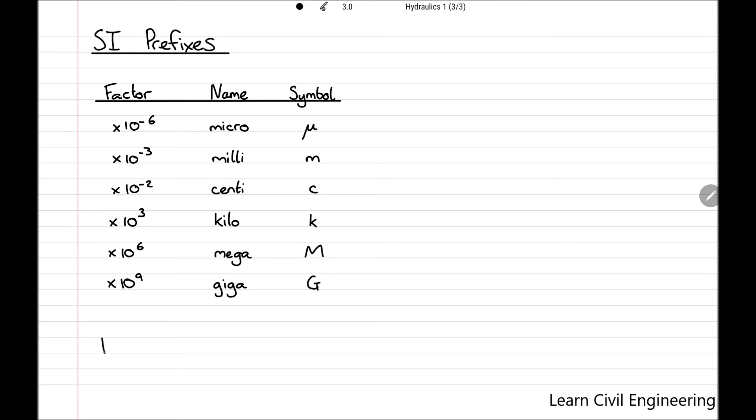An example of these being used is the standard atmospheric pressure, denoted p subscript a, and will be introduced later on in this series. The standard atmospheric pressure is equal to 1.01 times 10 to the power of 5 pascals, but this can be more conveniently written as 101 kilopascals.